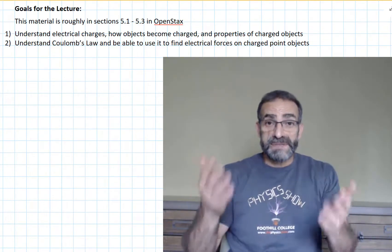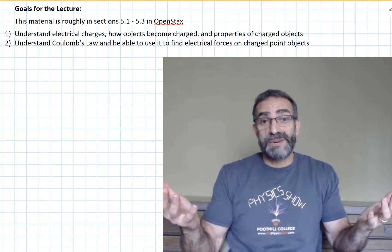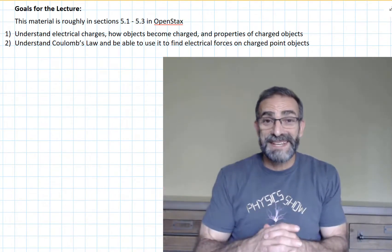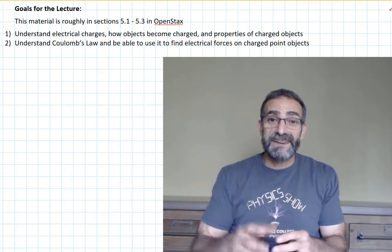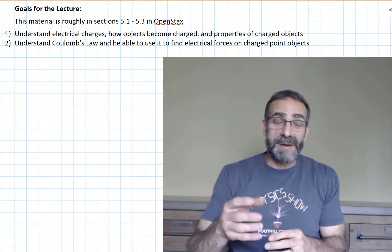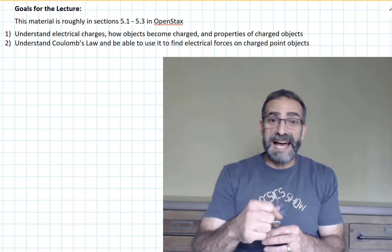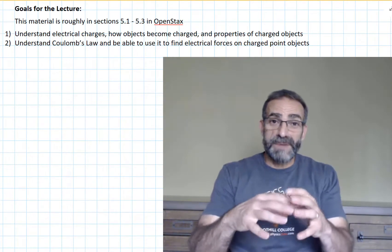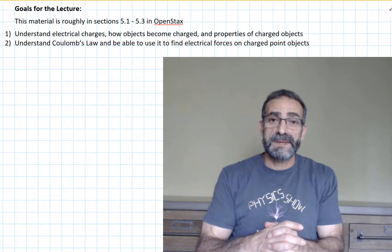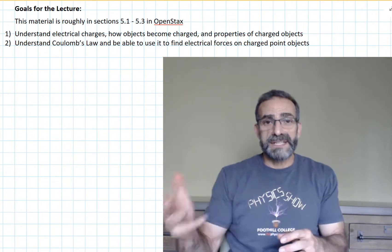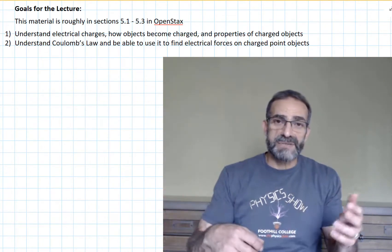We know we have two types of charge, and someone had to come up with a name for them, so they came up with positive and negative. One type is positive — that's at the core of the atom, the nucleus, from the protons. The other type of charge, the negative charge, is carried by the electron.